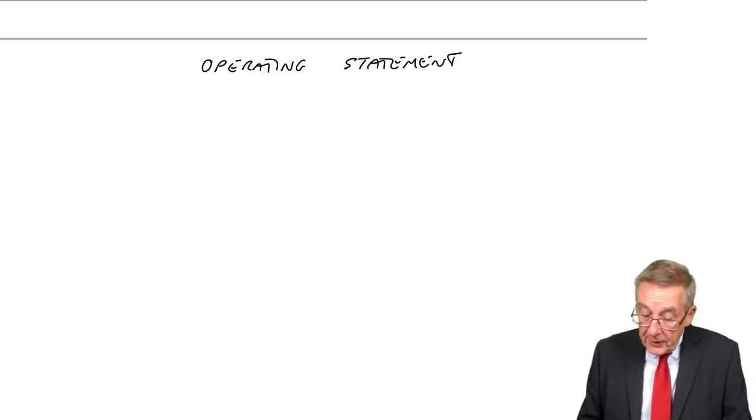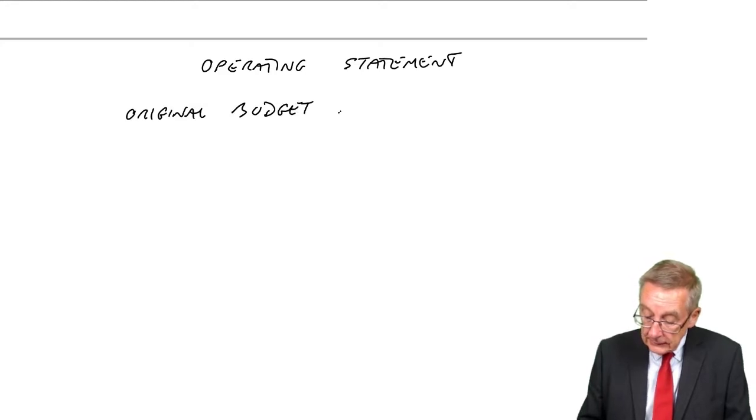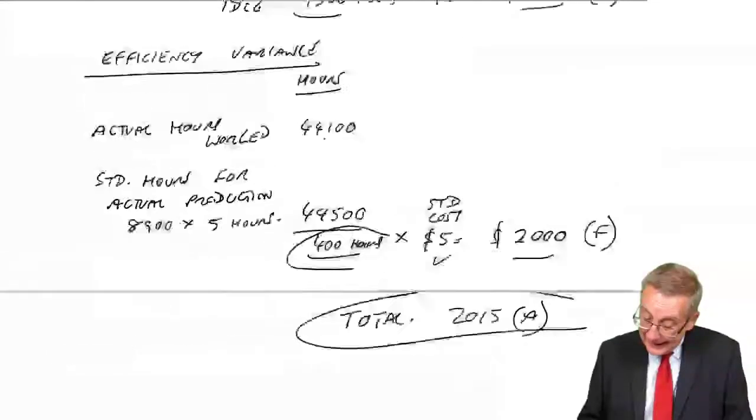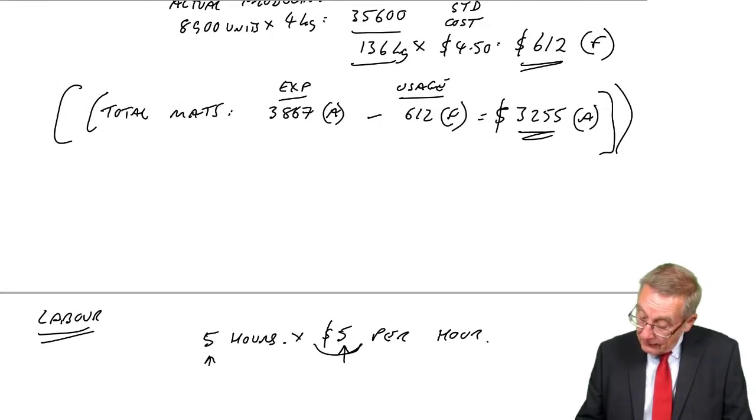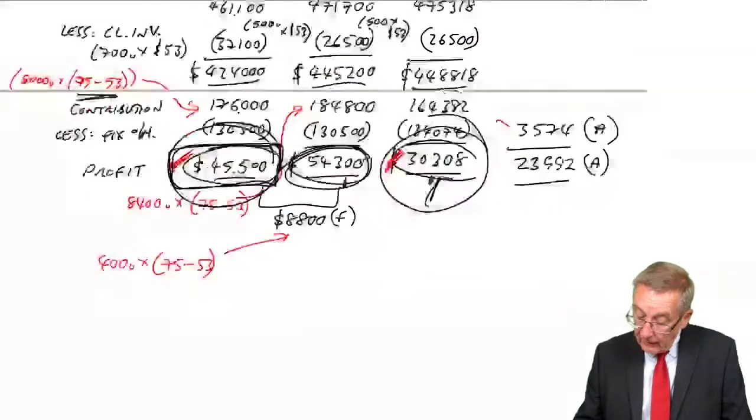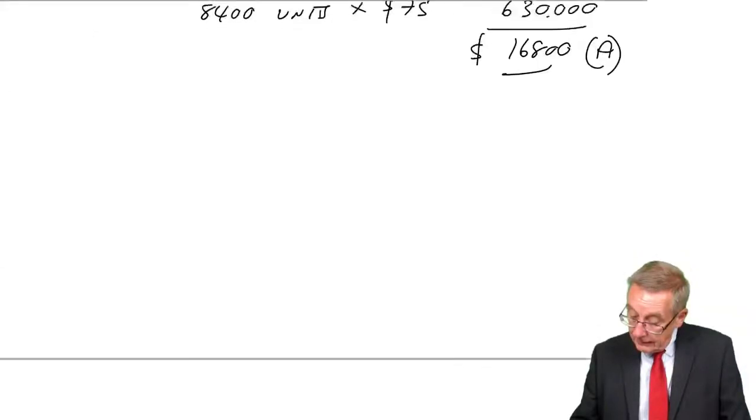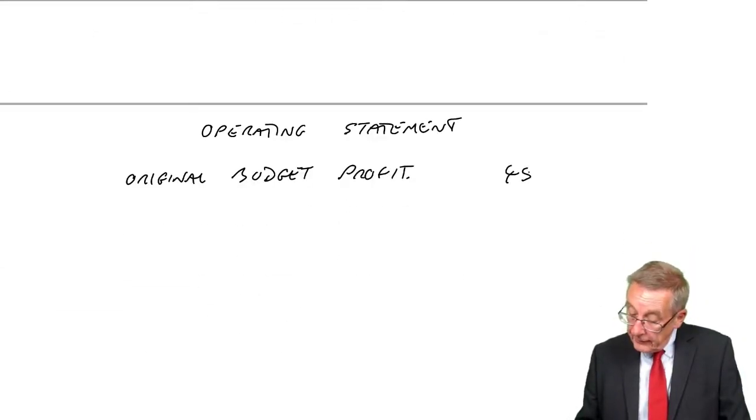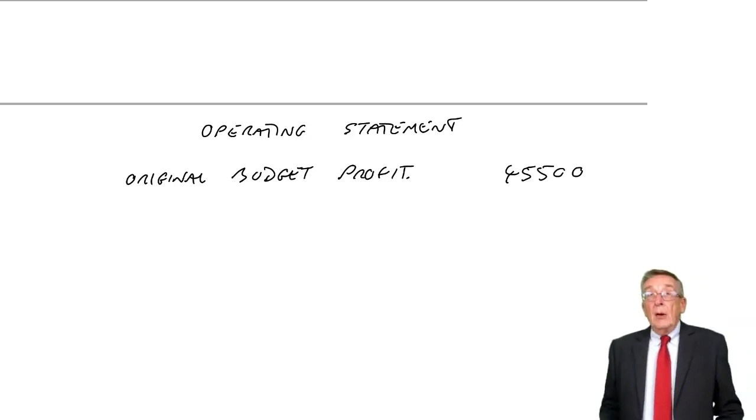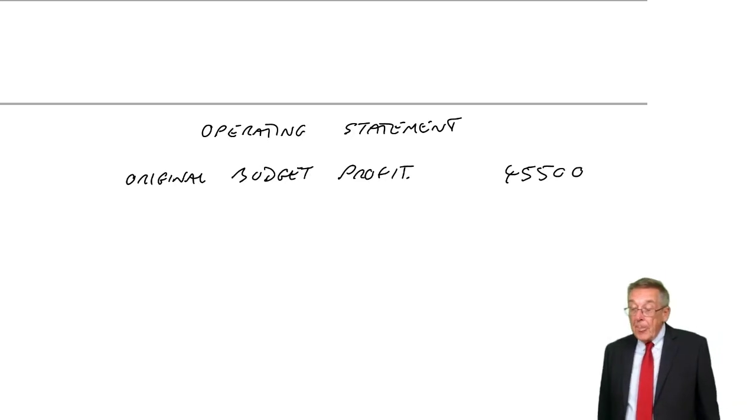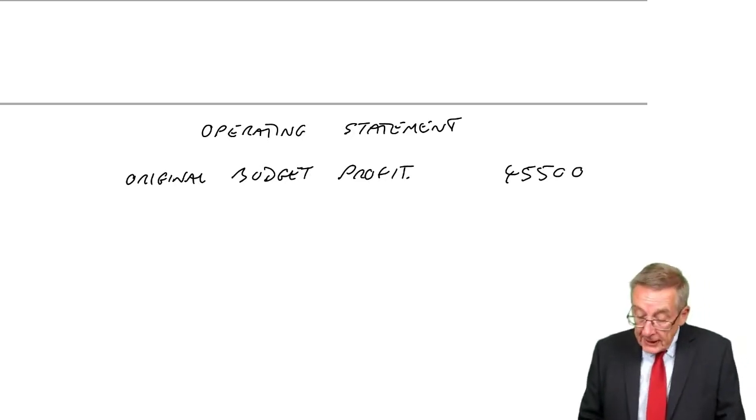Now, you'd never have to prepare this statement, but you are expected to understand what it is. And it won't take me minutes to do, we've done all the workings. So there'll be a little bit of up and down, I'm afraid, here, but our operating statement. We always start this statement with the original budget profit. The original budget profit was 45,500.